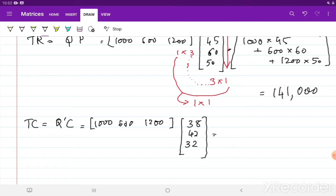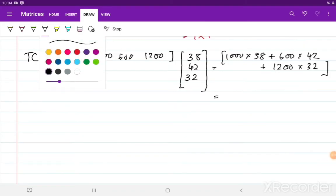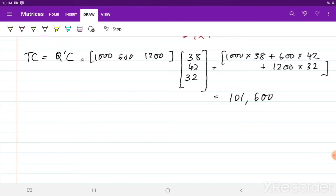So what I will get is again a 1 cross 1 resultant which is 1000 into 38 plus 600 into 42 plus 1200 into 32, which is equal to a 1 cross 1 value of... So the answer for that is 101,600.